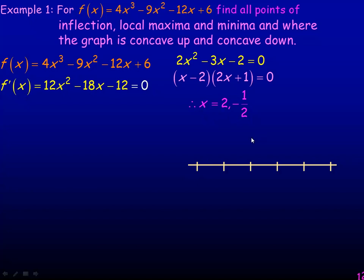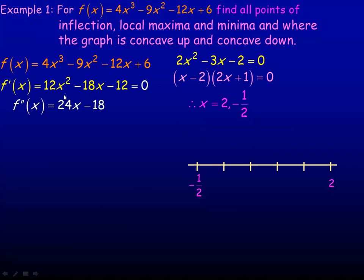I'm going to put those on the number line. Each tick mark is a half, so we have negative one half and 2 marked. Now let's take the second derivative. The derivative of 12x squared would be 24x. The derivative of negative 18x would be negative 18. We'll set that equal to zero to start investigating concavity and where we might have points of inflection.